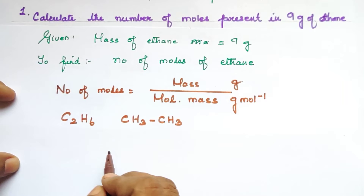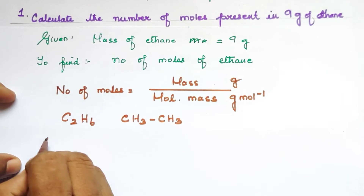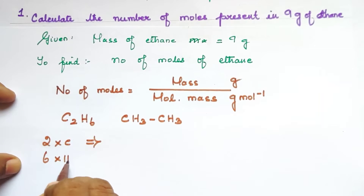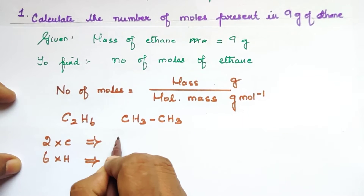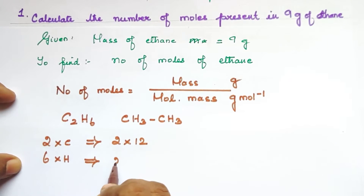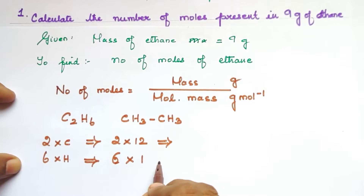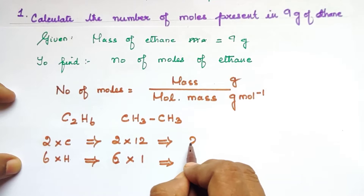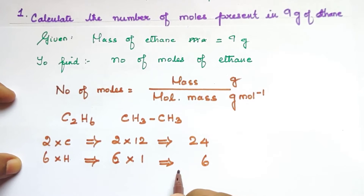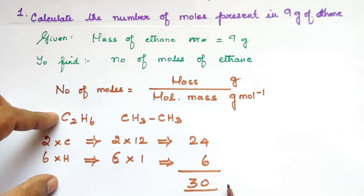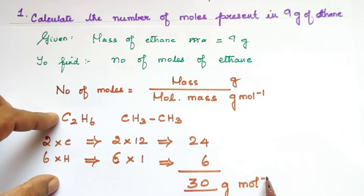Now we will calculate the molar mass. We have 2 carbon atoms, so 2 × 12 (atomic mass of carbon = 12), and 6 hydrogen atoms, so 6 × 1 (atomic mass of hydrogen = 1). Multiplying: 2 × 12 = 24, and 6 × 1 = 6. Adding them: 24 + 6 = 30. So the molar mass of ethane is 30 g/mol.